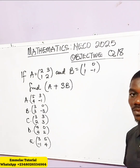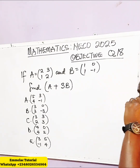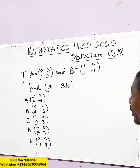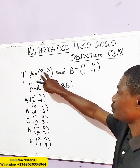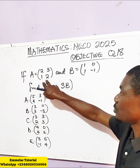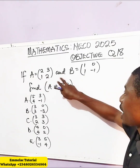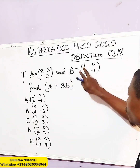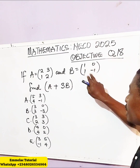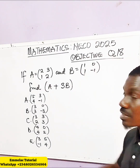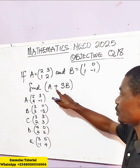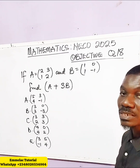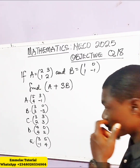Welcome to EmilaConline tutorial. Before us is question number 18, and it says: if A is the matrix of 2, 3, 1, 2 and B is the matrix of 1, 0, 1, and negative 1. Find the matrix of A plus 3B.